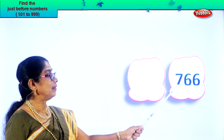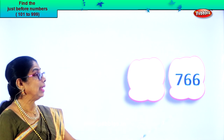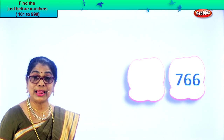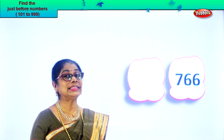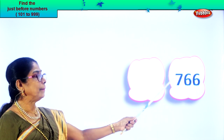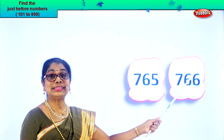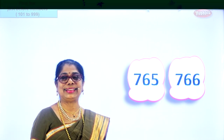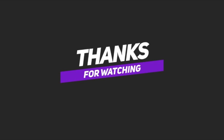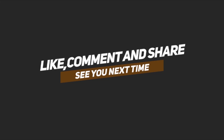Look what you have — seven hundred and sixty-six. In the ones place you have six, tens place six, and hundreds place seven. Read: seven hundred and sixty-six. What is one less than six? Five. What is one less than sixty-six? Sixty-five. So your number before is seven hundred and sixty-five. Seven hundred and sixty-five, seven hundred and sixty-six. Thank you!